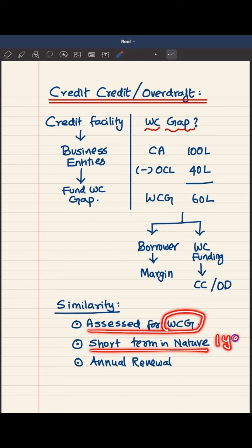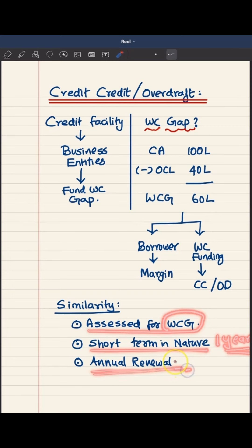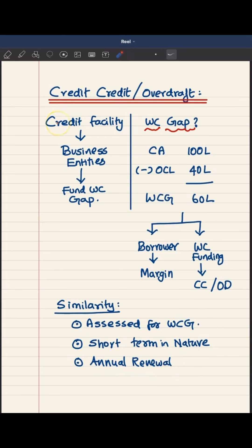Both these facilities are short-term in nature, generally sanctioned for a one-year period, and are subjected to annual renewal. Every year the facility will be reviewed and renewed for another one year. These are all the commonalities between cash credit and overdraft.